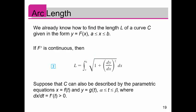We already know how to find the length L of a curve C given of the form y as a function of x, where x is bound between a and b. If f prime is continuous, then this arc length formula that I have here: the length is the integral from a to b of the square root of 1 plus dy/dx squared dx. This is something you should have learned from Calc 1.